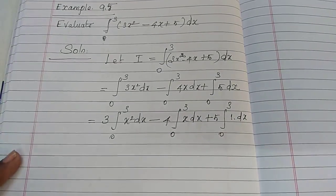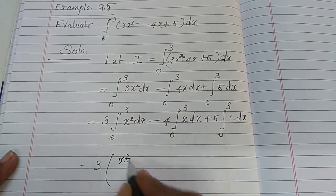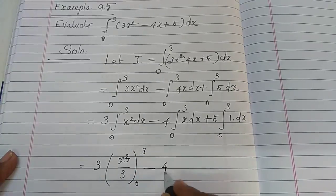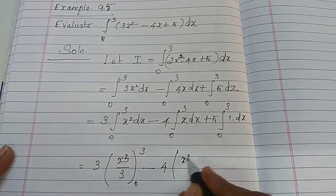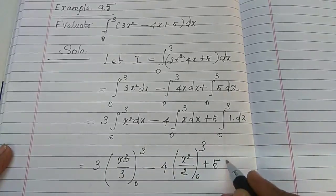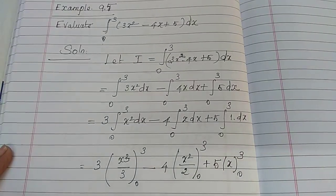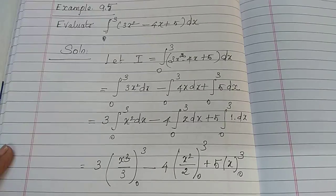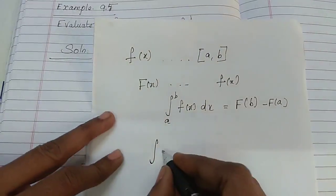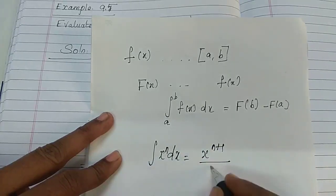Now apply the integral formula. So 3 times [x cubed by 3] from 0 to 3, minus 4 times [x squared by 2] from 0 to 3, plus 5 times [x] from 0 to 3. The applied formula is: integral of x to the power n dx equals x to the power (n+1) divided by (n+1). The 3 in the numerator and denominator cancel.